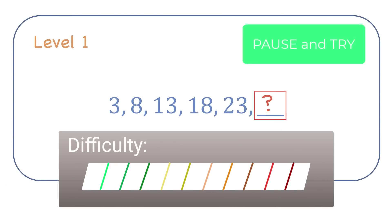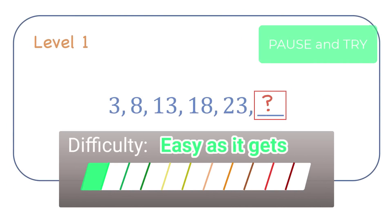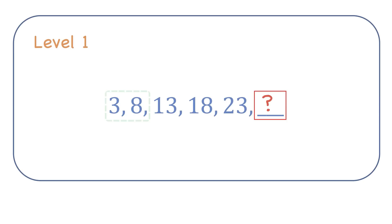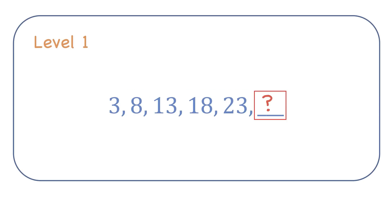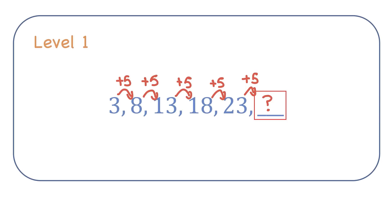Level 1. In this sequence of numbers, you should notice that there's a common difference between each pair of consecutive numbers. The common difference is 5. To get from the first number to the second number, I would add that common difference of 5. To get from the second to the third, add 5 again, and this pattern holds true for each consecutive number. So to find out what number comes after 23, I just have to add 5 to it. So my missing value, 23 plus 5, is 28.